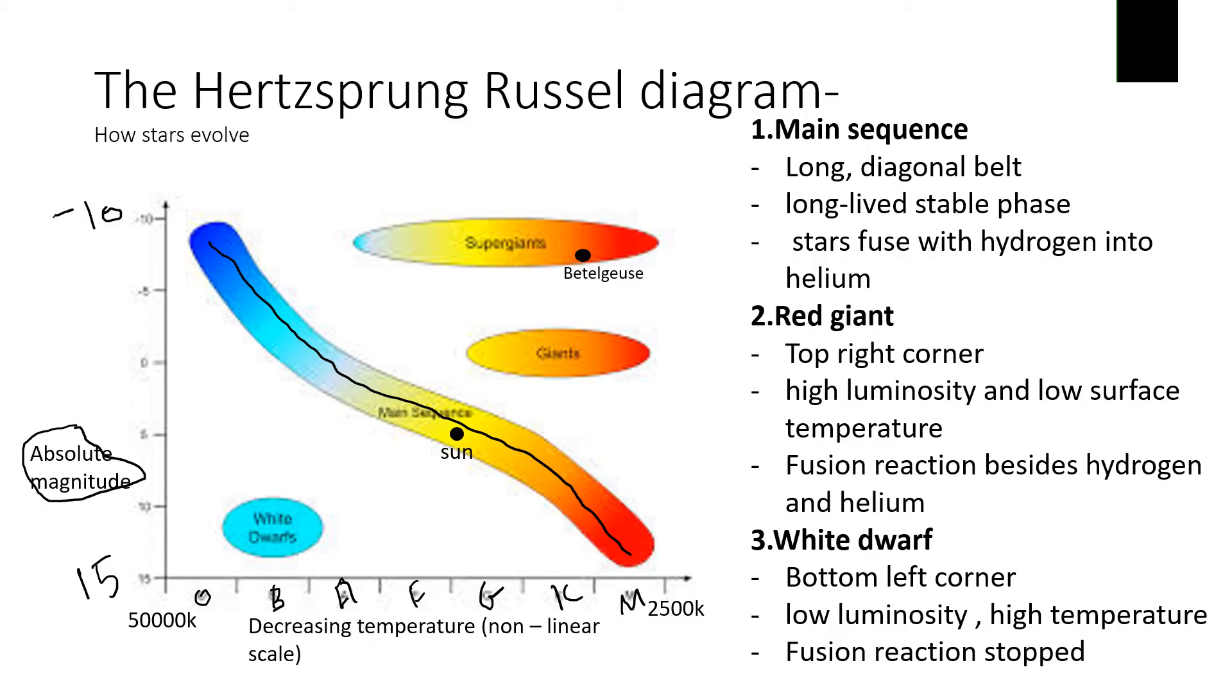The other thing, so you need to be able to identify on here the main sequence and draw that from memory. Got the giants and the supergiants, you need to be able to locate those. Those are stars later in their life cycles, which have expanded. And then the old remnants after a supernova explosion of these white dwarfs down here.